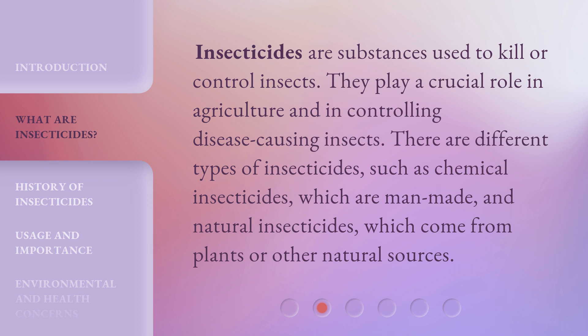Insecticides are substances used to kill or control insects. They play a crucial role in agriculture and in controlling disease-causing insects. There are different types of insecticides, such as chemical insecticides, which are man-made, and natural insecticides, which come from plants or other natural sources.